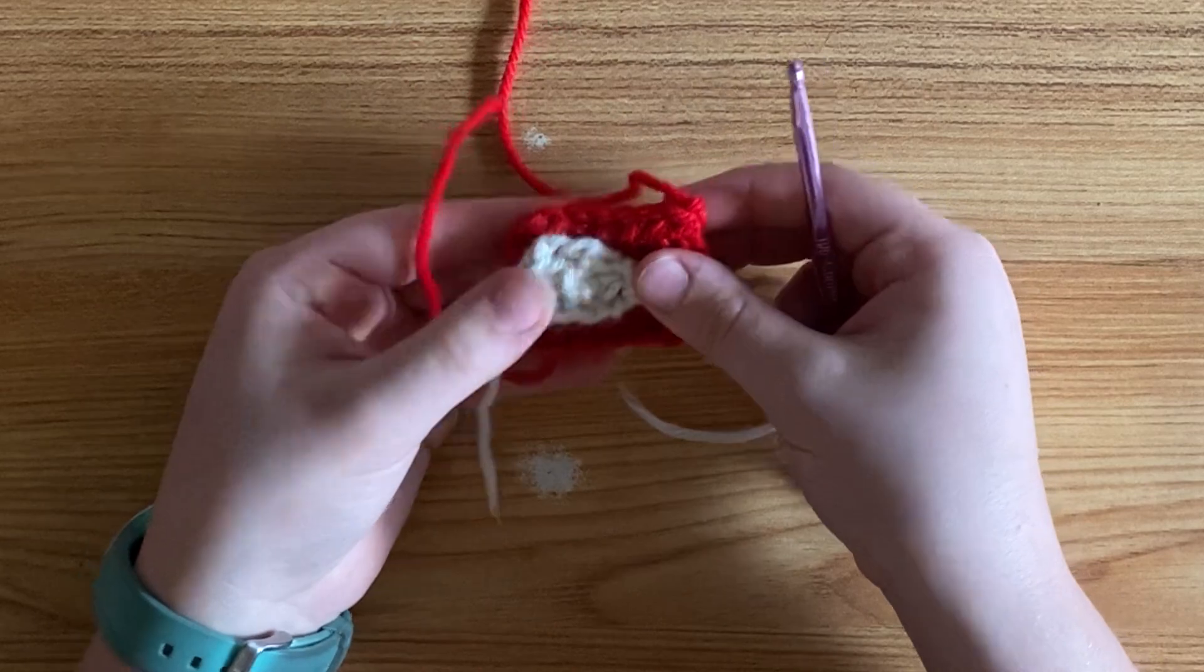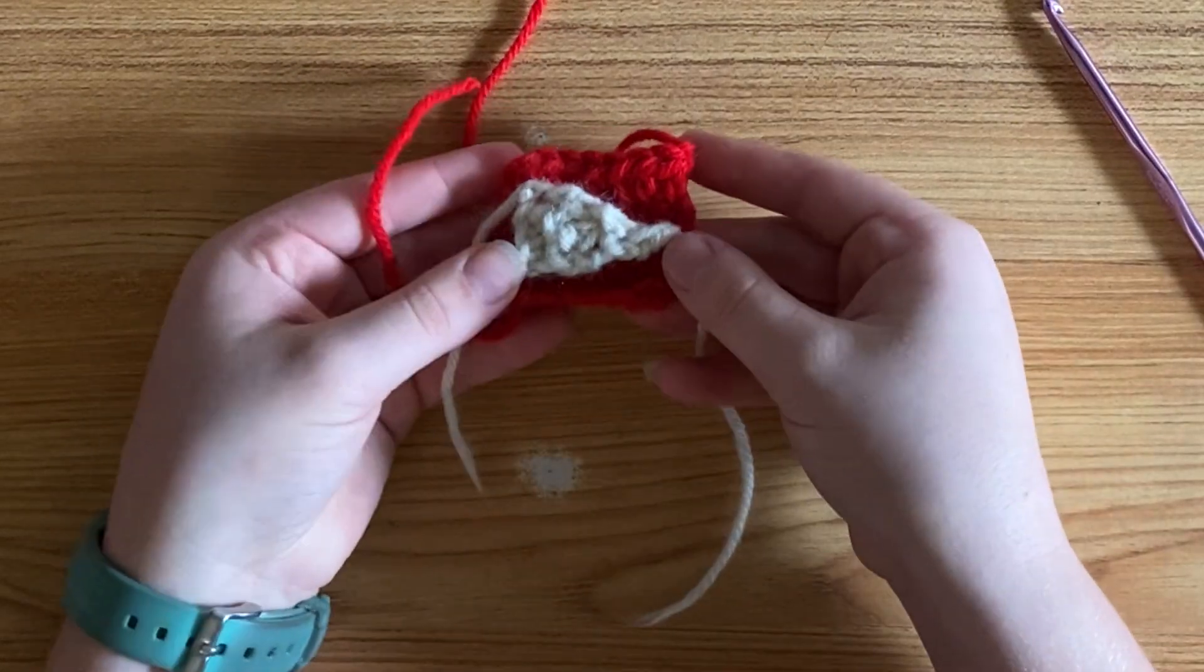Then you can cut your yarn and fasten off, and then you need to sew your triangle to your red square.